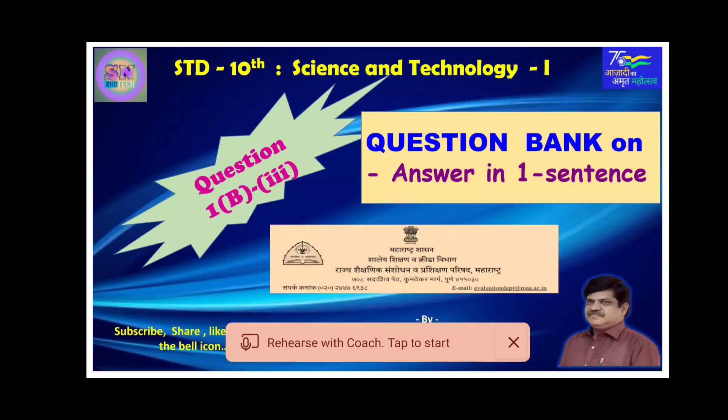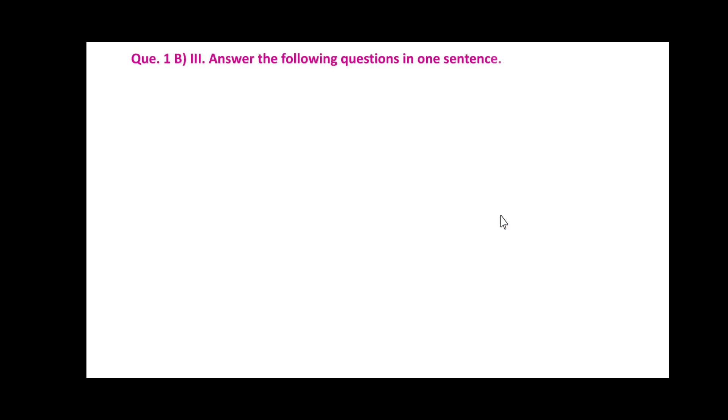Today we are going to discuss the question bank of Science and Technology part one. The type of question is answer in one sentence, such questions could be asked in question number 1B. In previous videos we discussed a few options of this question number 1B. Today we will be dealing with these answer in one sentence questions. Let us start.